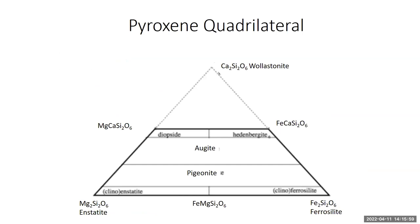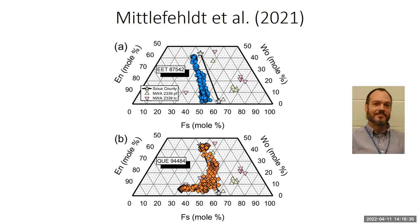This is what's called the pyroxene quadrilateral. The three parts of the triangle are: magnesium pyroxene (enstatite), iron pyroxene (ferrosilite), and at the top, calcium pyroxene (wollastonite). You don't find pyroxenes naturally with that much calcium, so it's pretty much the bottom — the pyroxene quadrilateral — that matters. Different pyroxenes have different compositions, names, and crystal structures. This work by Doug Middlefeld shows the pyroxene quadrilateral with examples of how composition varies for some eucrites — the compositions do vary and just don't stay in one place.